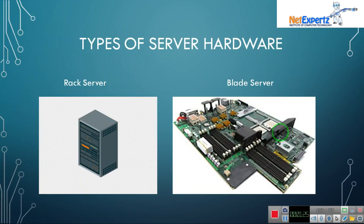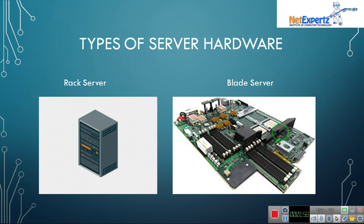Now let's talk about types of server hardware. If I need to make a server, what do I need? I need dedicated server hardware — rack server and blade server. Or I can use desktop machines or laptops as a server. I just need to install the server edition on my desktop or laptop, and it behaves as a server. I can install Server 2012, Server 2016, or Server 2019, and that machine automatically becomes a server and provides users with resources.